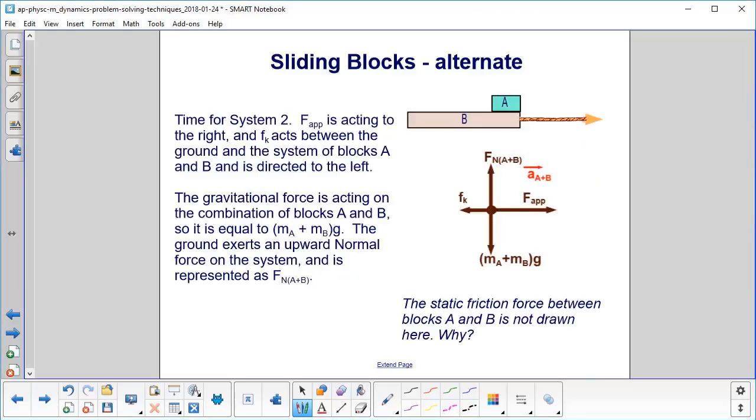System 2, you can see it's a bit simpler than the diagram we used earlier when System 2 was just block B. We have F_app acting to the right. We have the kinetic friction between the system of A and B acting to the left. Now the gravitational force is acting on the combination of blocks A and B, so we write it like this, M_A plus M_B times g. The ground is exerting an upward normal force on the system and is represented as normal of A plus B.